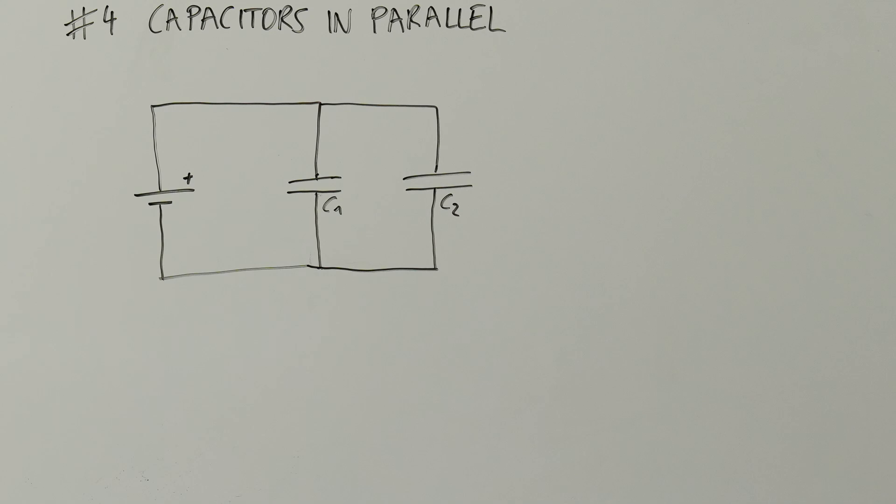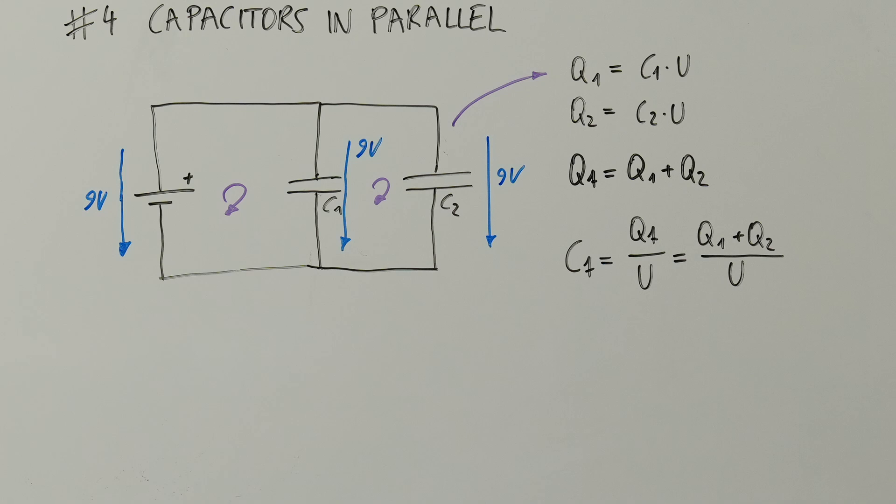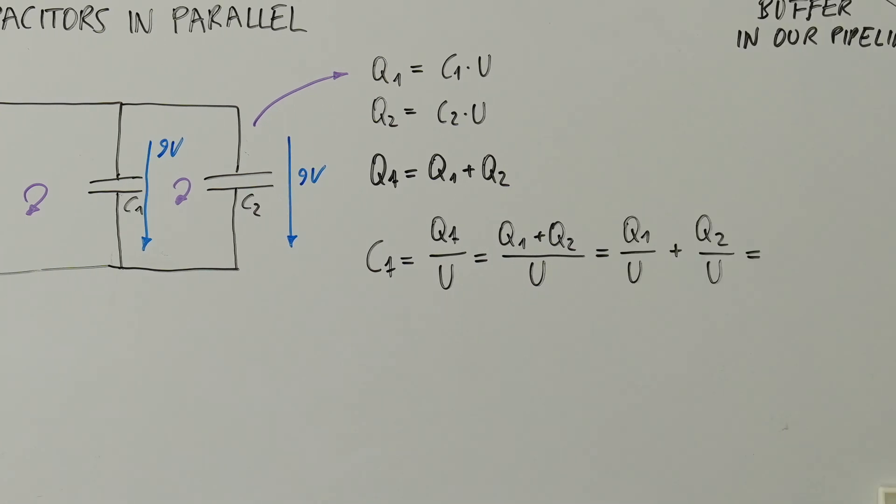If we add a second capacitor in parallel, both capacitors will experience the same voltage as the net voltage in a loop must be zero. Both capacitors have their capacitances, so we know that both will have the charges according to the capacitance formula. Consequentially, the total charge of the capacitors is the sum of the charge of the first and the second capacitor. Q is equal to Q1 plus Q2. So, C is equal to Qt over the voltage U, and Qt is equal to Q1 plus Q2 over U.